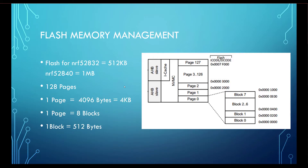The flash memory for nRF52832 devices is 512 KB, and for nRF52840 it's 1 MB. Today I'll discuss the nRF52832 — it's similar to nRF52840, just keep in mind that nRF52840 uses 1 MB. The nRF52832 flash memory is divided into 128 pages, each page has a size of 4 KB (4096 bytes), and each page is further divided into eight blocks, each block containing 512 bytes.